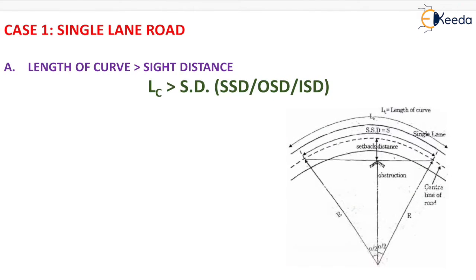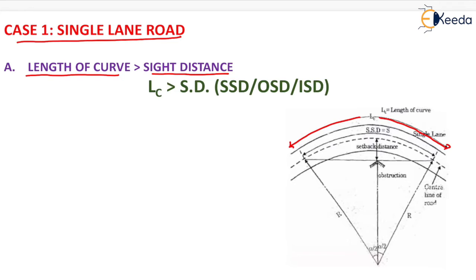We have to find the value of setback distance as per two cases: for single lane road and for two lane road. The first case is for single lane road, with the first condition being that the length of curve is greater than side distance. The length of curve and the side distance are shown in the figure, and the setback distance is represented as M.